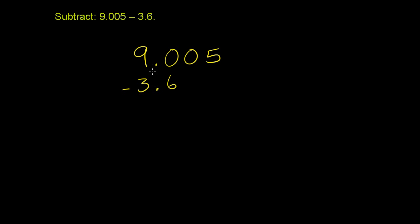So we've lined up the decimals, and now we're ready to subtract. We start up here, we have 5 minus nothing. You could imagine this 3.6, or this 3 and 6 tenths, we could add two zeros right here, and it would be the same thing as 3 and 600 thousandths, which is the same thing as 6 tenths.